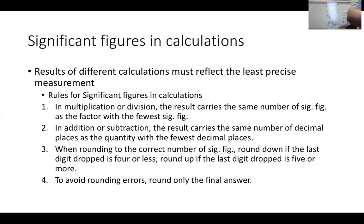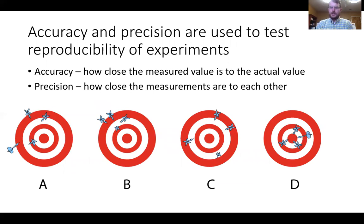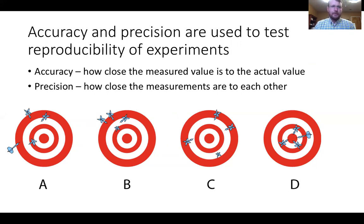Why do we care about scientific notation? It tells us accuracy and precision. Accuracy is how close we are to the actual value of what we're measuring. Precision is how close measurements are to each other. Look at the bullseye diagrams A, B, C, and D—determine which is accurate, which is precise, which is both, and which is neither.